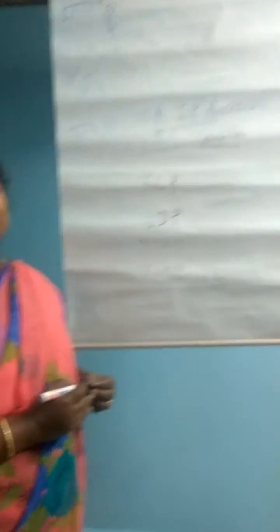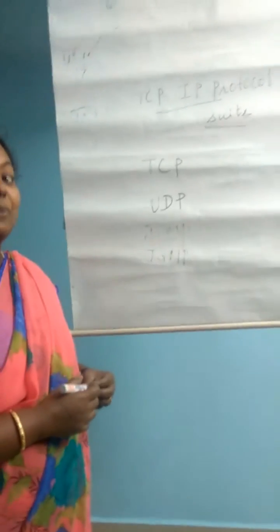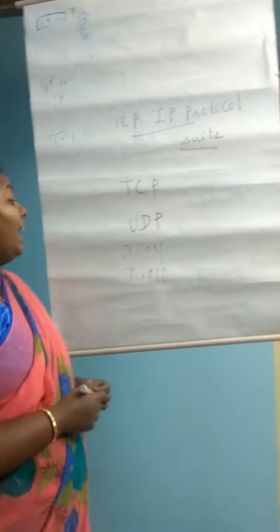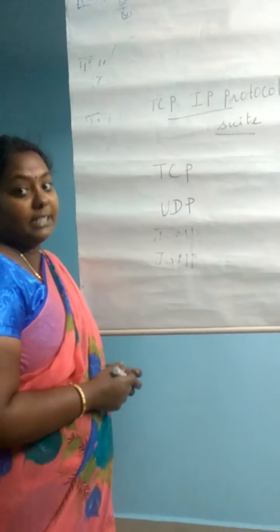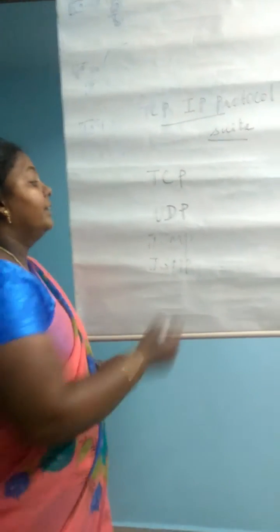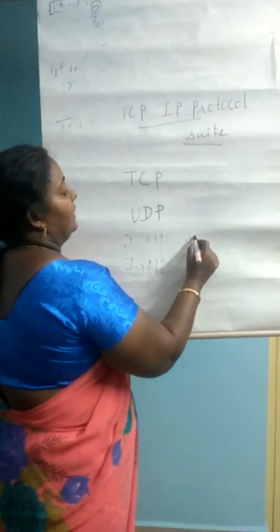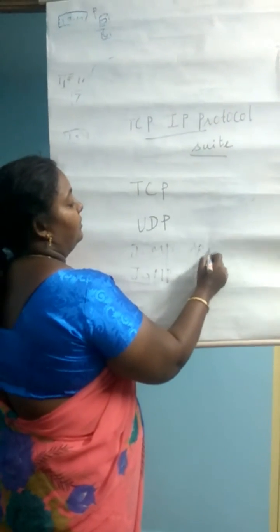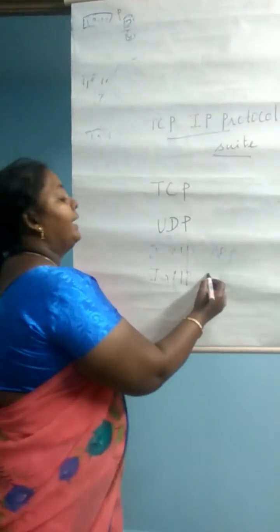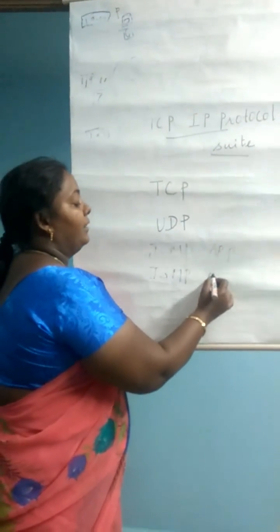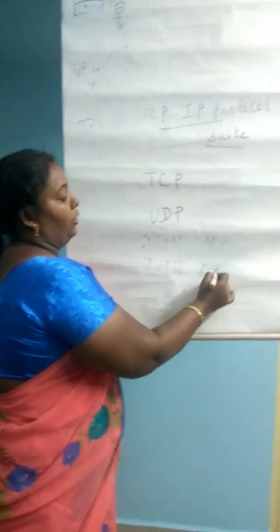ICMP is nothing but Internet Control Message Protocol. IGMP is nothing but Internet Group Message Protocol. ARP is nothing but Address Resolution Protocol. RARP is nothing but Reverse Address Resolution Protocol.